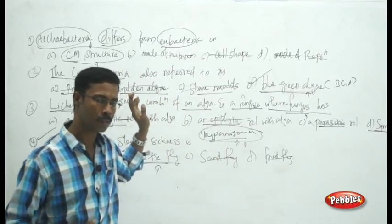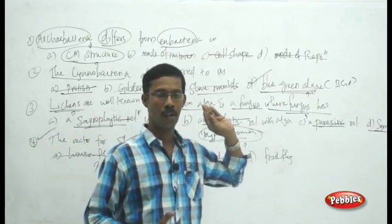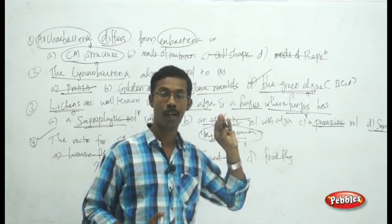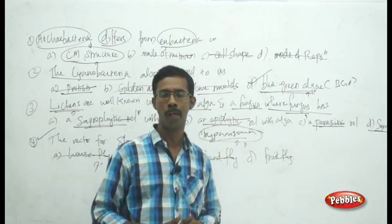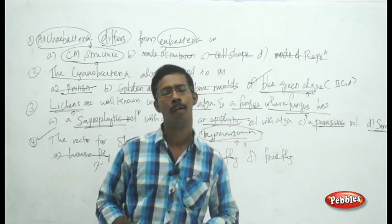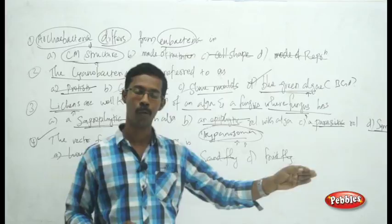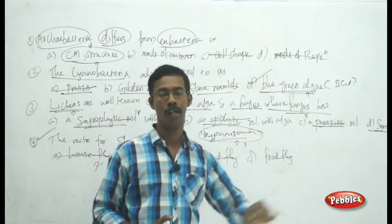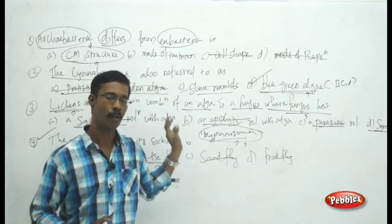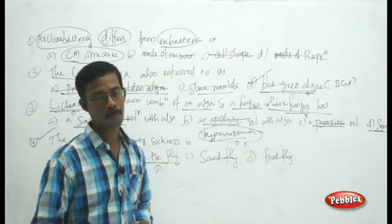To summarize, you need to identify the kingdom, know its major characters and identification features, and know common examples for each kingdom. We will continue with questions from the Plant Kingdom and Animal Kingdom in the next sessions.